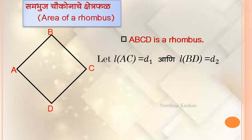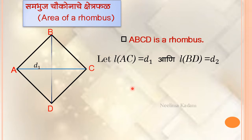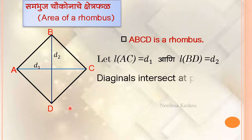As you can see, AC is the diagonal of this rhombus, so AC equals D1, and BD, the second diagonal, is D2. The diagonals of a rhombus are perpendicular bisectors of each other, and these diagonals intersect at point P.